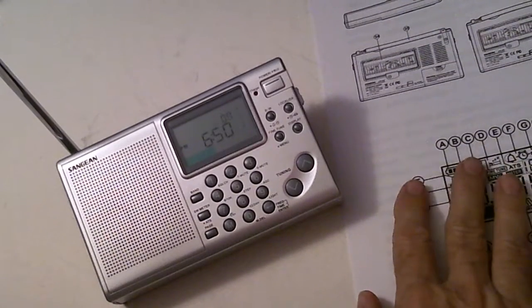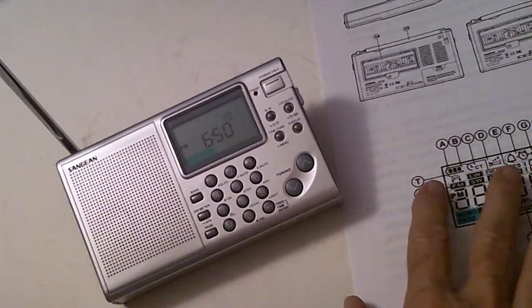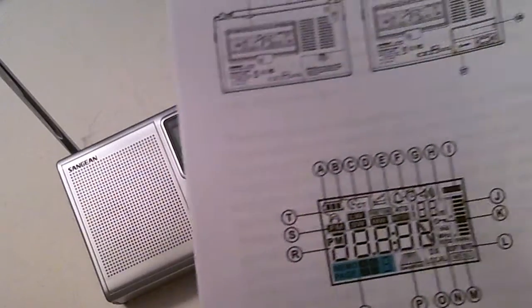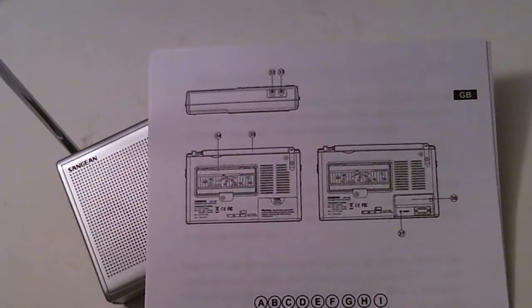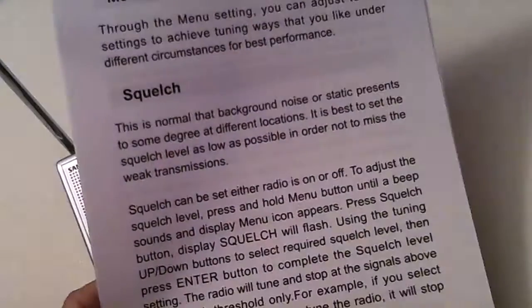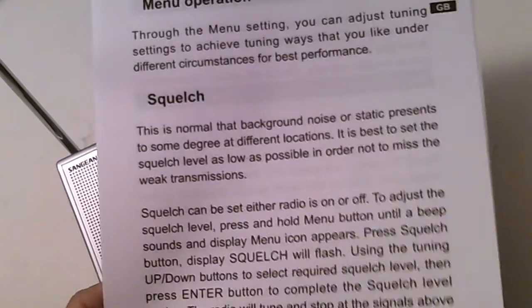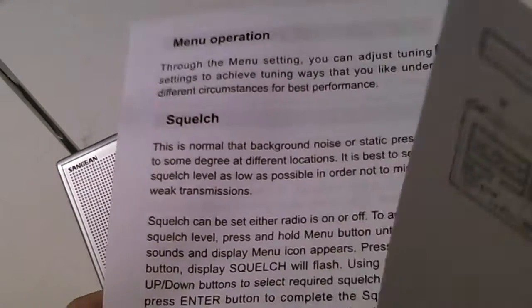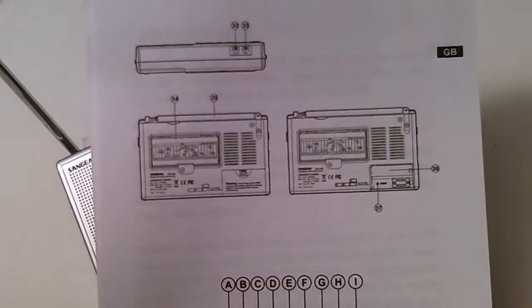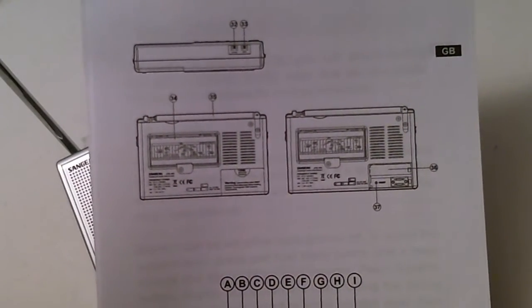I printed out some of the pages from the manual. You can find this manual online. You just go to Google and do a search on Sanjian ATS-405, and you can find the PDF of the manual for this radio. And you print it out. It prints out in pretty big font, which is good for my show because it makes it easier to read. But it makes for a lot of printing, it's like 35 pages. So I didn't print out the whole manual. I just printed out some key areas that I want to touch on today.